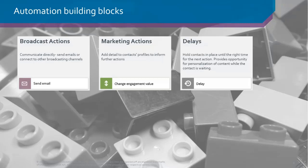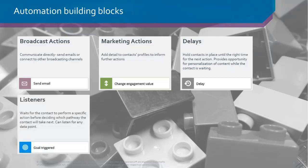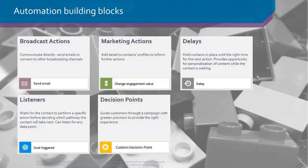Delays are used to orchestrate and time how a campaign works, but they're also a holding state where you're waiting for a contact to move to the next step. This provides an opportunity to personalize, because if a contact is held for a time, you can build rules around personalizing content on the site based on their position in the campaign. Listeners are also a holding point, but this is where the campaign is waiting for a specific action to happen — such as waiting for an email to be opened, a campaign to be triggered, or a goal to be triggered.